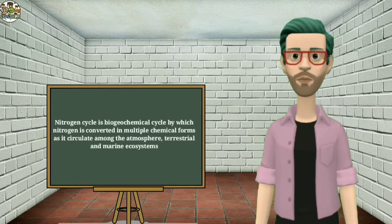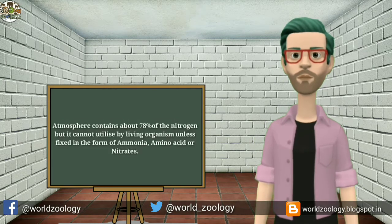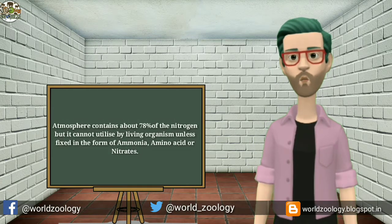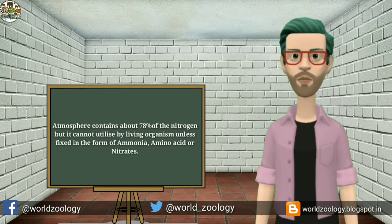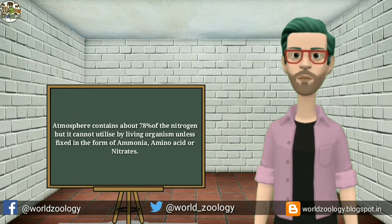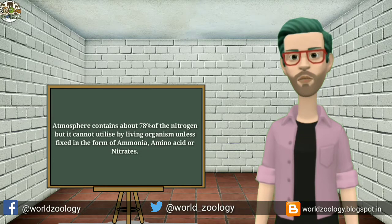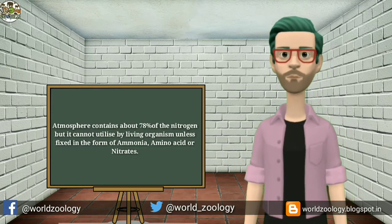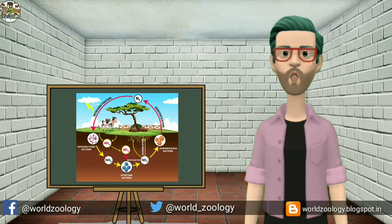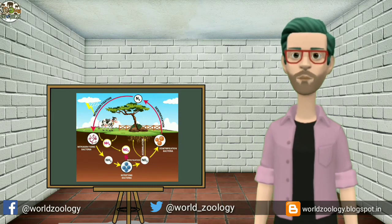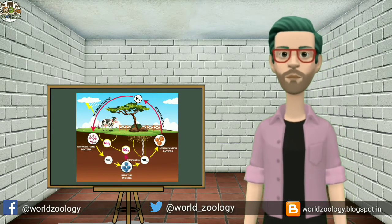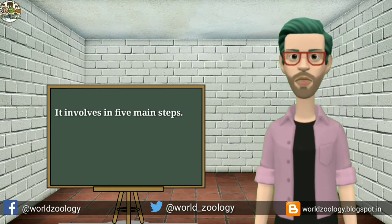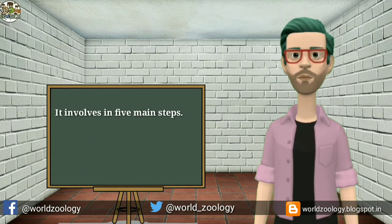Terrestrial and marine ecosystems share this cycle. The atmosphere contains about 78 percent nitrogen, but it cannot be utilized by living organisms unless fixed in the form of ammonia, amino acids, and nitrate. Once nitrogen is available in these compounds in the soil, it is cycled and recycled through the ecosystem.